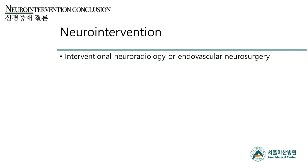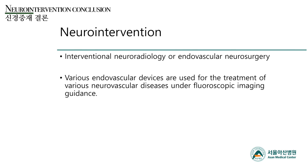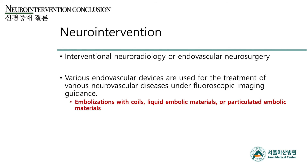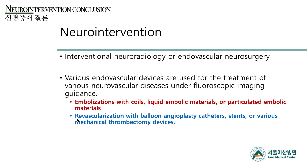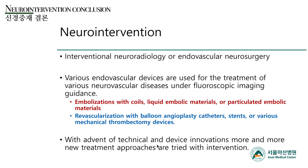We have reviewed various typical neurointerventional procedures and devices. Neurointervention, whether called interventional neuroradiology or endovascular neurosurgery, requires various endovascular devices for the treatment of neurovascular diseases under fluoroscopic imaging guidance — including embolization with coils, liquid embolic materials, or particulate embolic materials, or revascularization with balloon angioplasty catheters, stents, or various mechanical thrombectomy devices. With the advance of technical and device innovations, more and more new treatment approaches are being tried with intervention. Thank you.